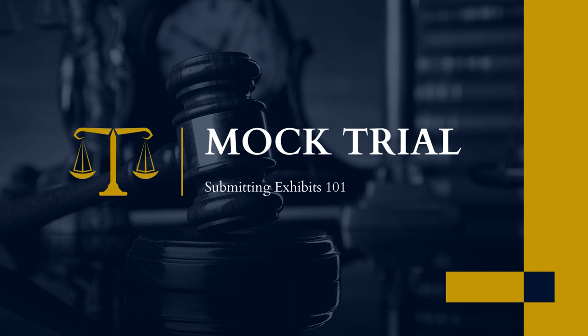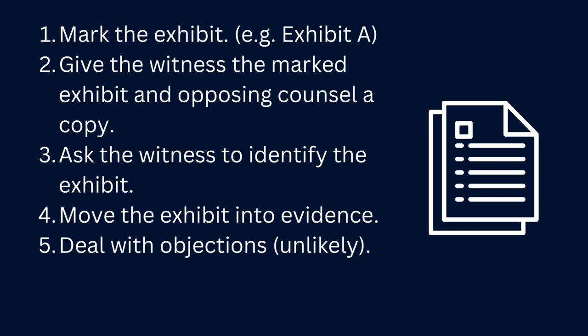Your process is very straightforward. Once you do this a couple of times, you'll have it down. First, you're going to mark your exhibit. This requires going up to the clerk and asking the clerk to mark the exhibit — usually exhibit A, B, C, maybe 1, 2, 3, 4, 5, something like that.